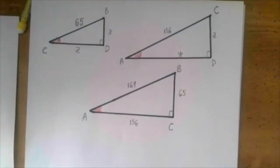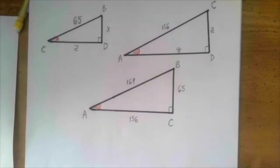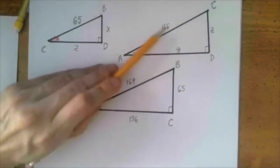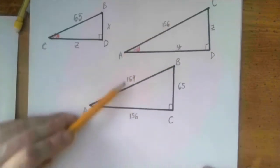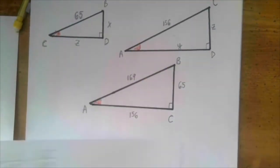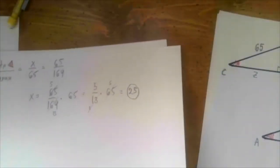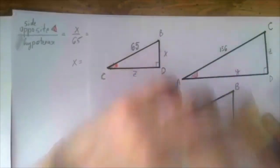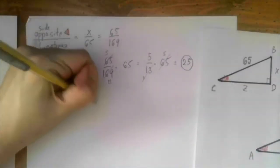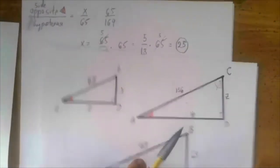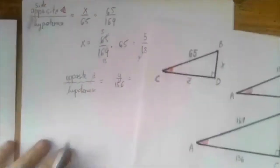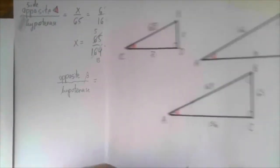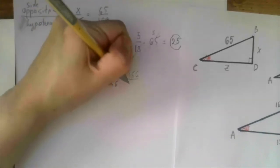To find y, we use the ratio involving y and the hypotenuse in the second triangle ADC, compared to the same ratio in the original triangle. So: y over 156 equals opposite beta over hypotenuse. In the second triangle, y is opposite beta and 156 is the hypotenuse. In the big original triangle, opposite beta is 156 and the hypotenuse is 169. So y over 156 equals 156 over 169.